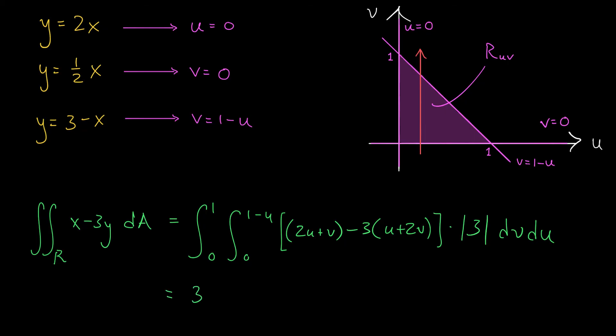I can simplify this expression, pull out the 3, the integral from 0 to 1, the integral from 0 to 1 - u of -u - 5v dv du. At this point, our integral is in a form that we can actually evaluate using all the basic techniques that we learned last week. So I'm not going to work through the details, but I'll let you check. You should get a final answer of -3.